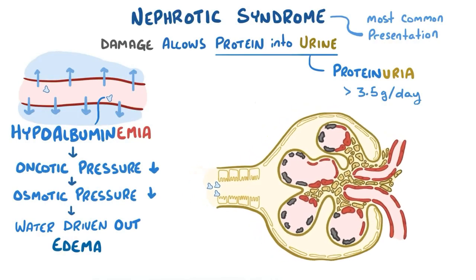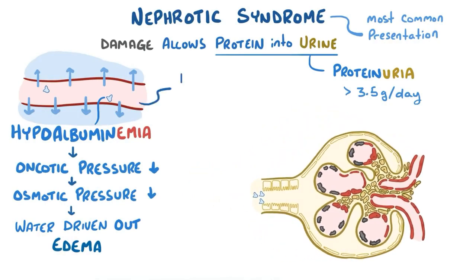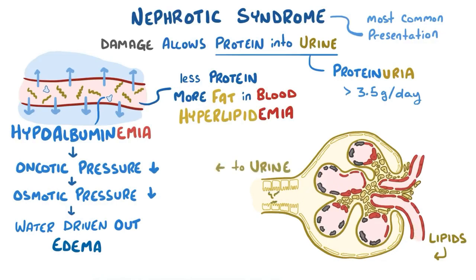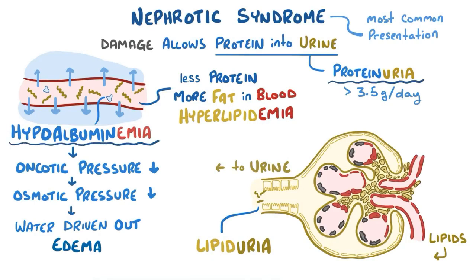It's thought that as a result of either losing albumin or losing proteins that inhibit the synthesis of lipids, you get increased levels of lipids in the blood, called hyperlipidemia. Just like the proteins, these lipids can also get into the urine, causing lipiduria. And those are the hallmarks of nephrotic syndrome: proteinuria, hypoalbuminemia, edema, hyperlipidemia, and lipiduria.